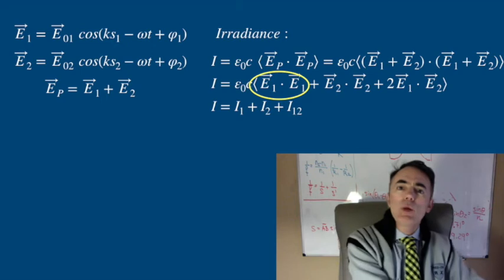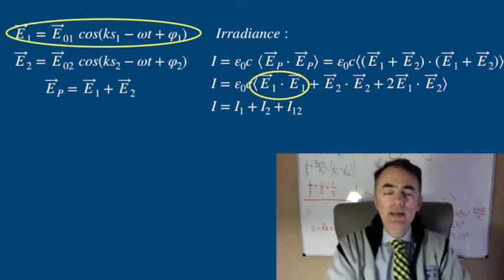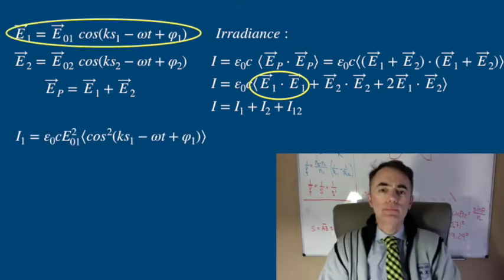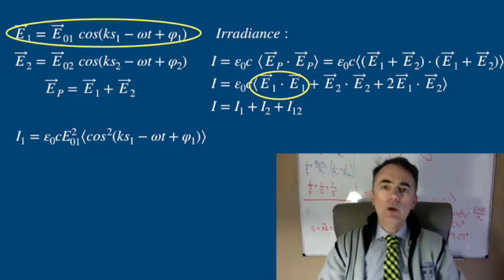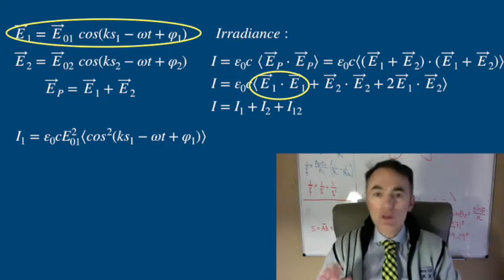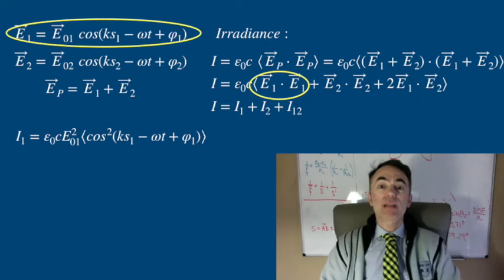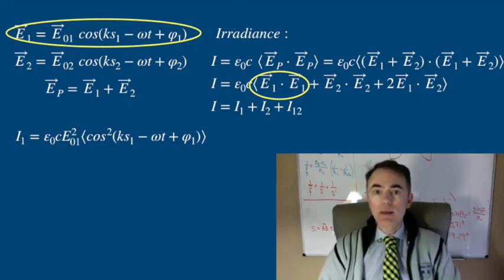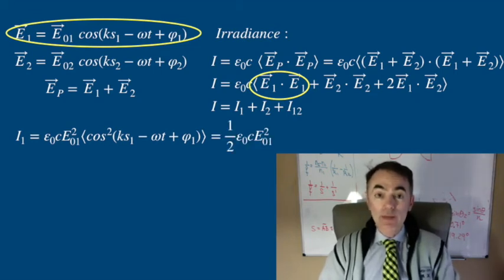For each of the individual irradiance we have that... Because the average of a cosine square where the oscillations are fast with respect to the time of average, which is the case, this is one-half, then...